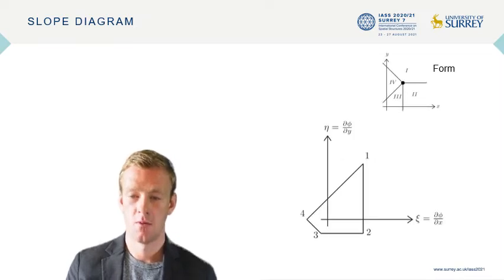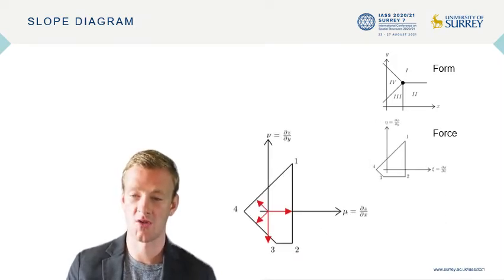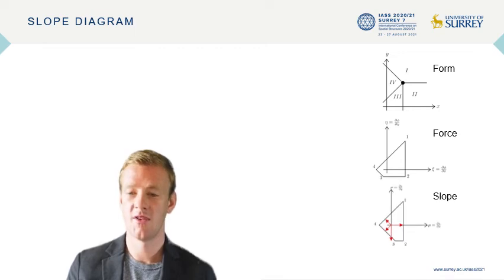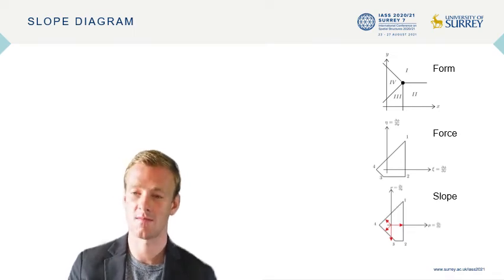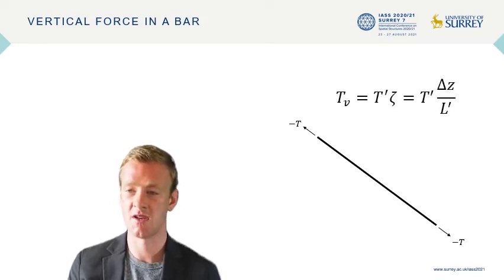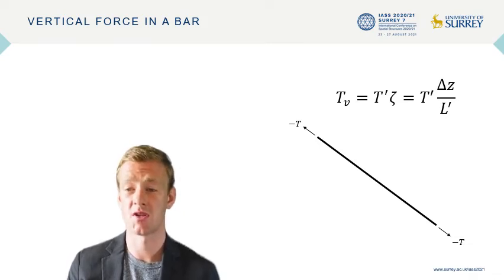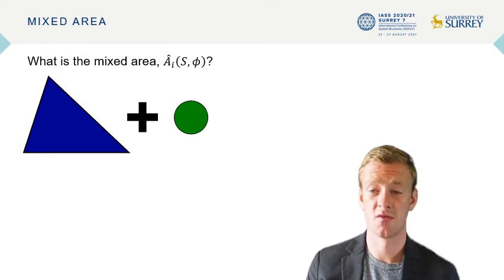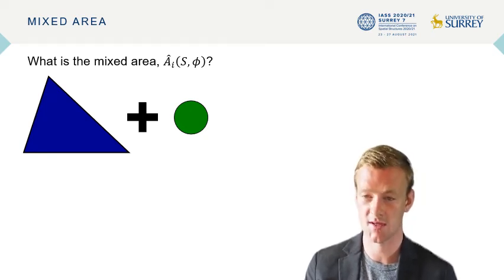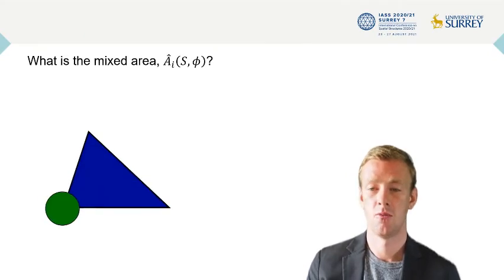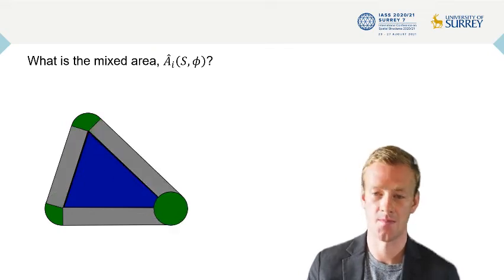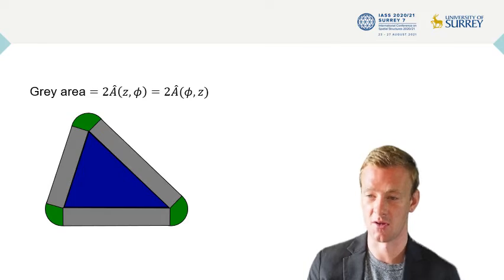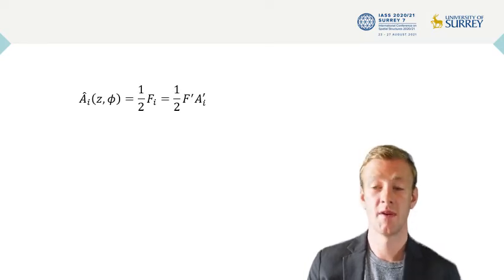We now return to discuss the slope diagram, which is a new reciprocal diagram in graphic statics. Take a form diagram: one can construct a force diagram by taking the first derivative of the airy stress function, and similarly one can construct a slope diagram by taking the first derivative of the grid shell. Therefore, the slope diagram describes the curvature of the grid shell. These three diagrams combine to describe the equilibrium conditions. The vertical force in a bar equals the horizontal force given by the force diagram multiplied by the slope given by the slope diagram. This vertical force can be found by considering the mixed area of the force and slope polygons — the mixed area is related to the Minkowski sum. One can drag one polygon around the perimeter of the other; the grey area is equal to twice the mixed area of the two polygons. The mixed area of the force and slope diagrams is equal to half of the applied load on a given node in the grid shell.